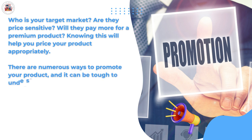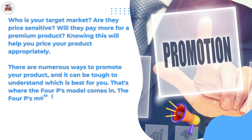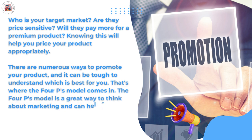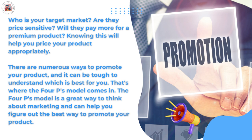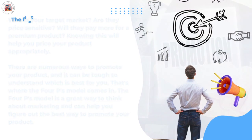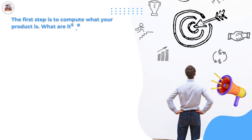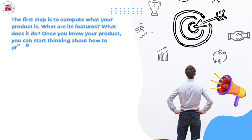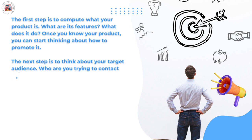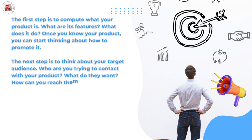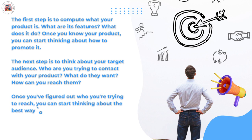There are numerous ways to promote your product, and it can be tough to know which is best for you. That's where the 4Ps model comes in. The first step is to define what your product is — what are its features and what does it do? Once you know your product, you can start thinking about how to promote it. The next step is to think about your target audience — who are you trying to reach, what do they want, and how can you reach them? Once you've figured out who you're trying to reach, you can start thinking about the best way to promote your product.